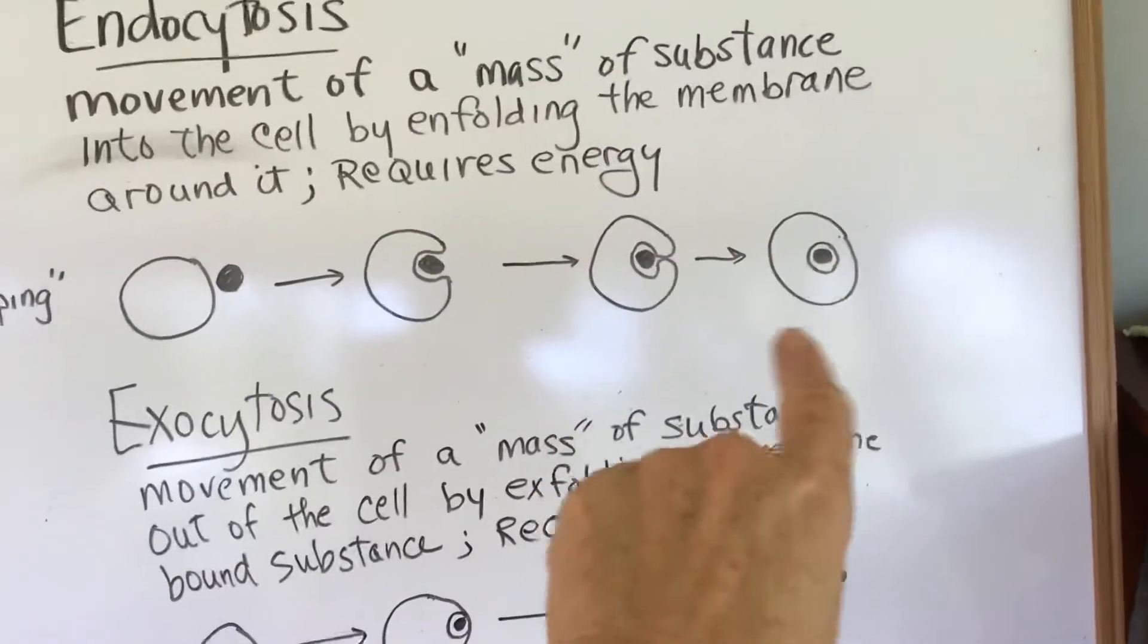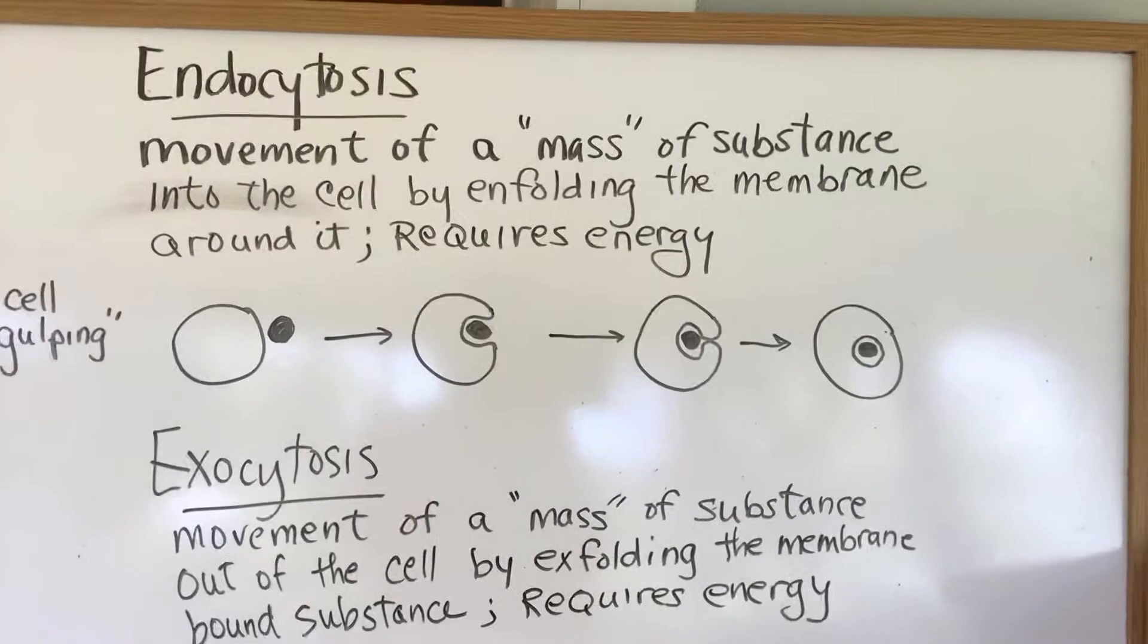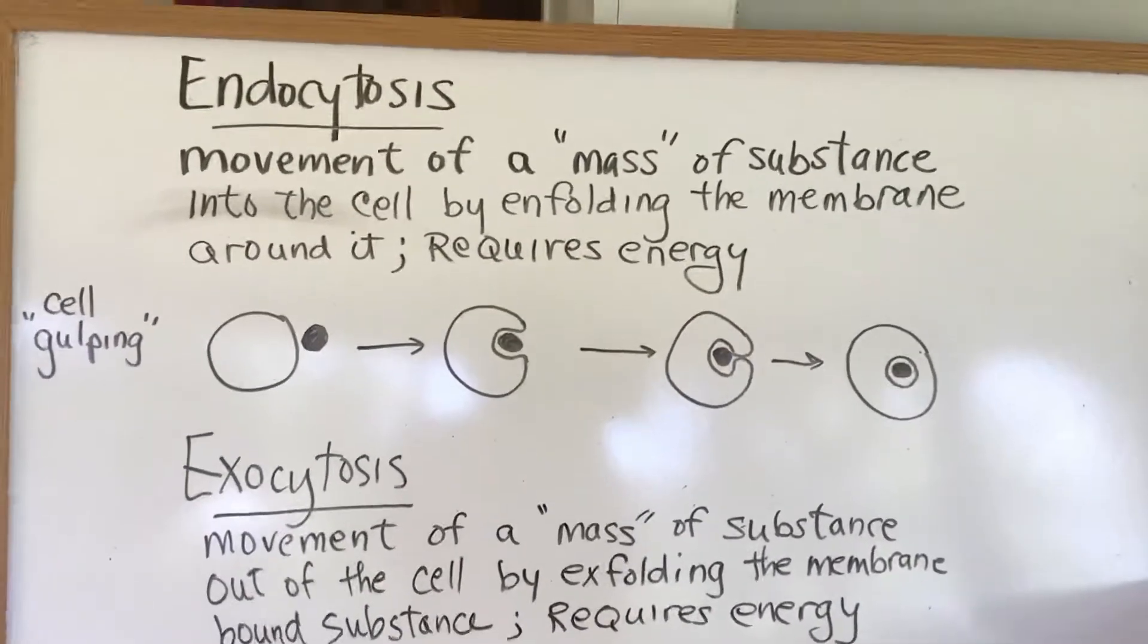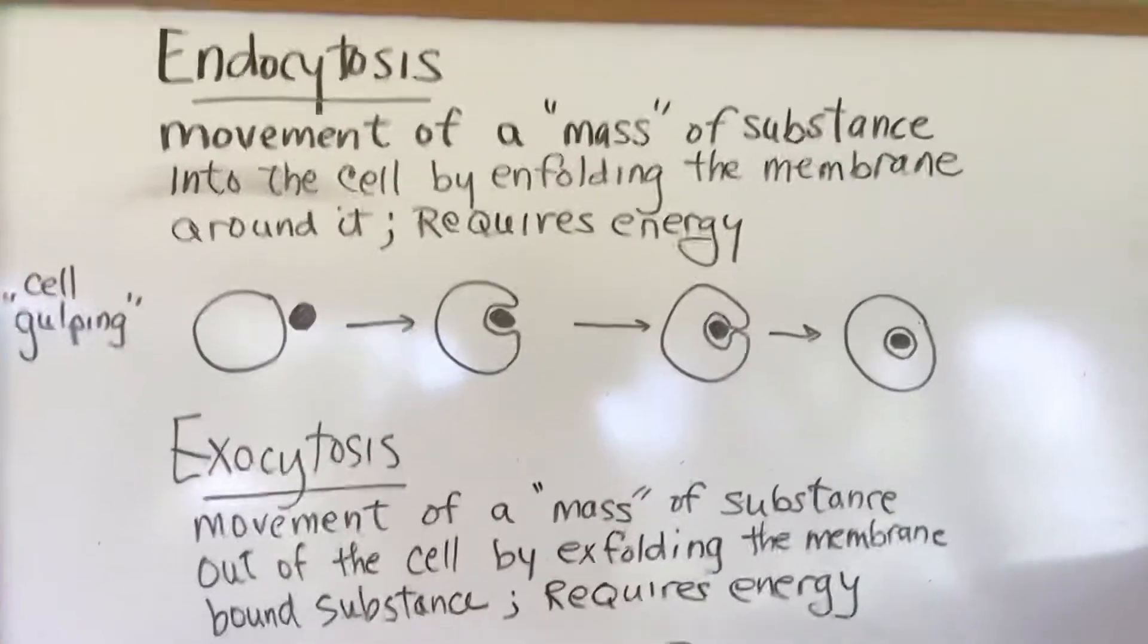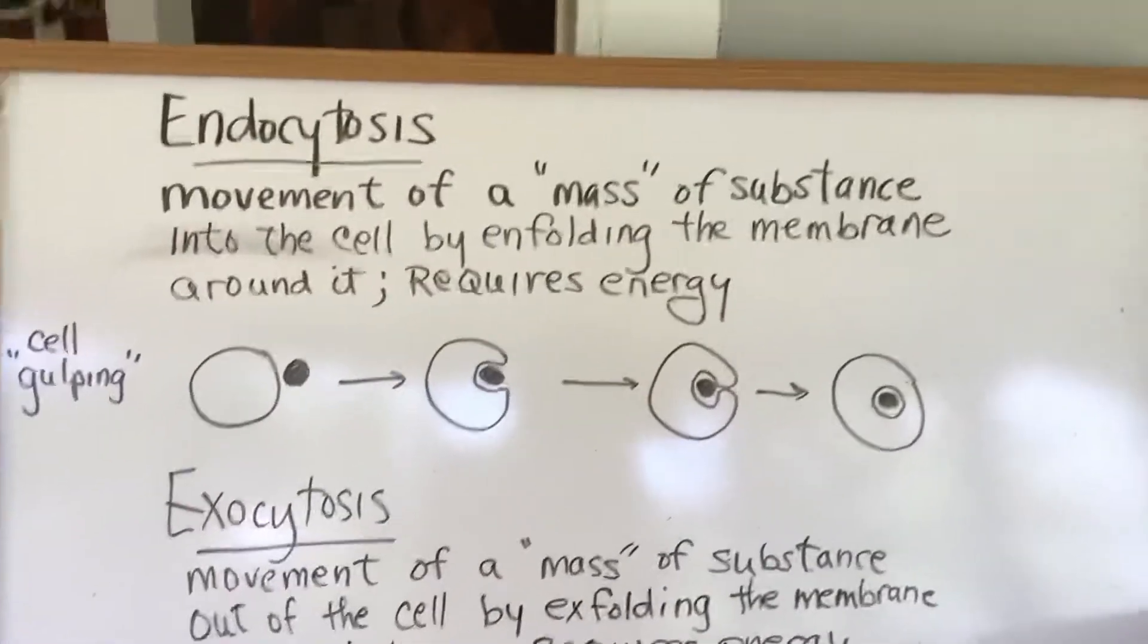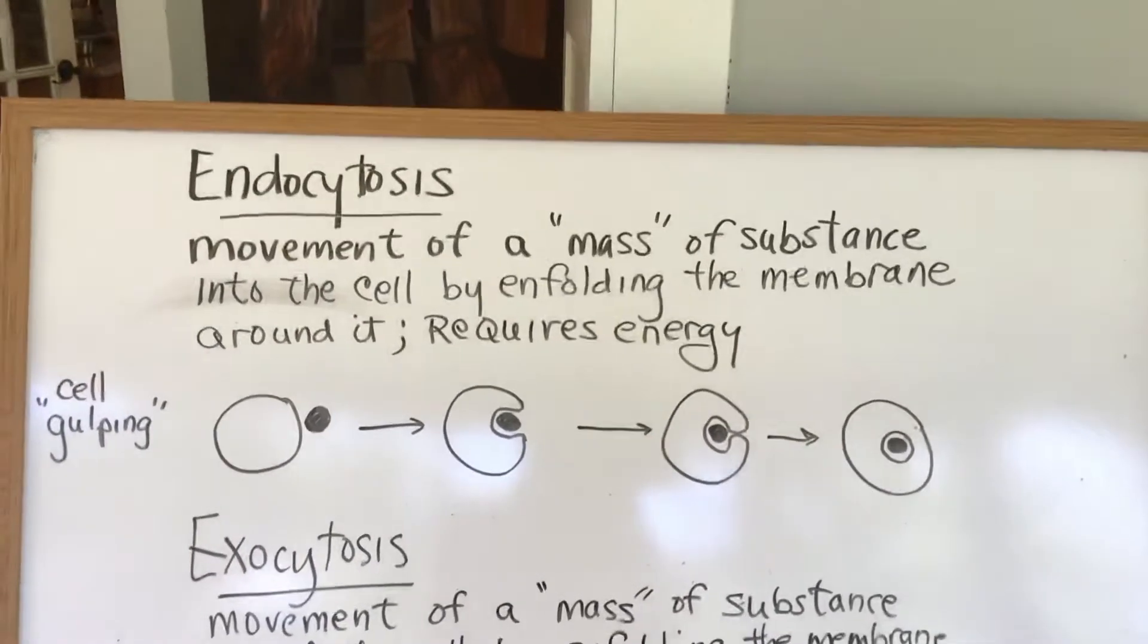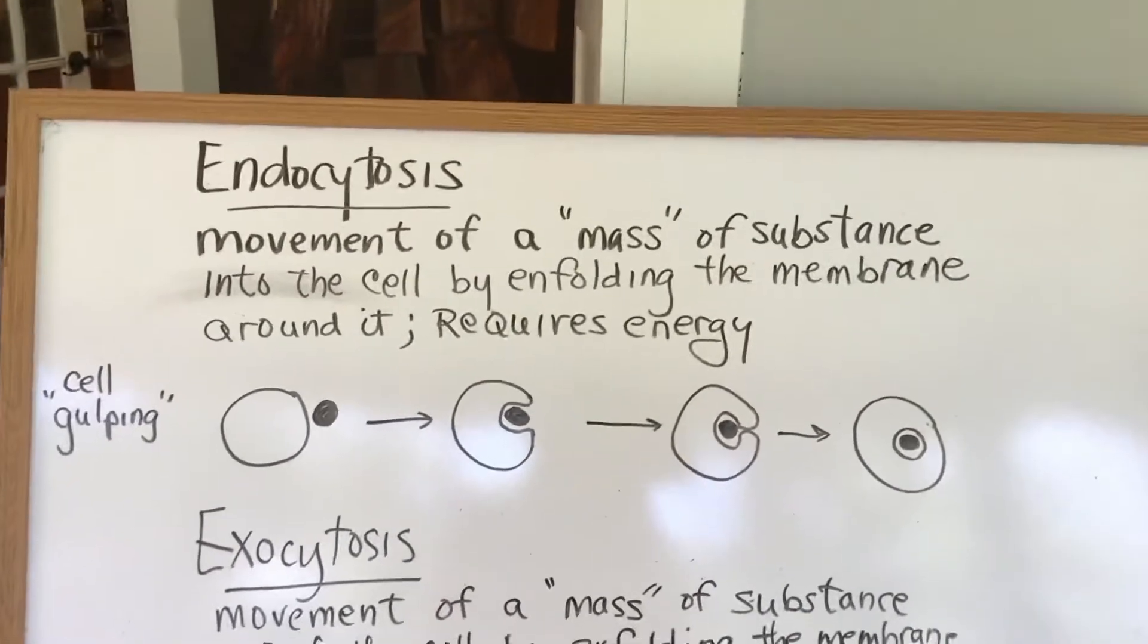It basically makes a membrane bound sack of whatever that substance is inside of the cell. So it's basically just folded itself around it and engulfed it, and now it's created a vesicle or a vacuole that is filled with material of some sort.